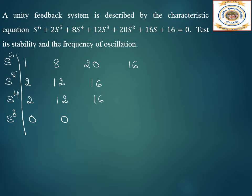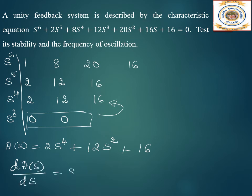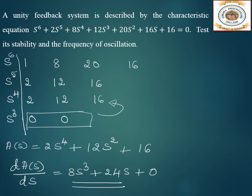When an entire row is zero, we take the row above it as the auxiliary equation. The auxiliary equation is 2s⁴ + 12s² + 16 = 0 (using only alternate even-power terms). Differentiating with respect to s gives 8s³ + 24s. We replace the zero row with these coefficients: 8, 24, 0.